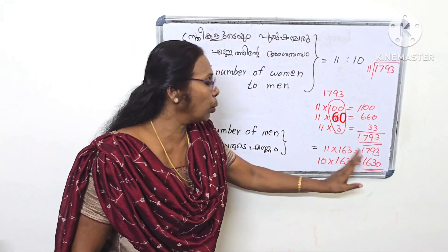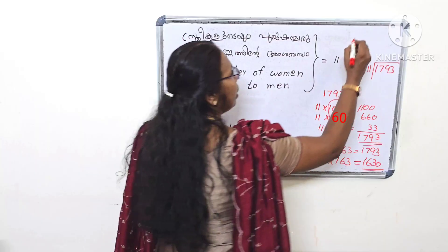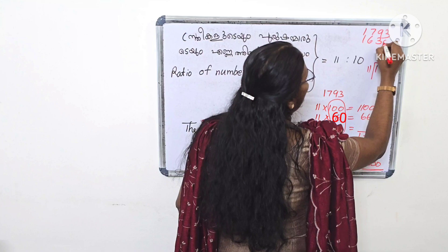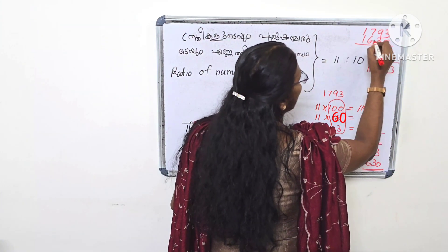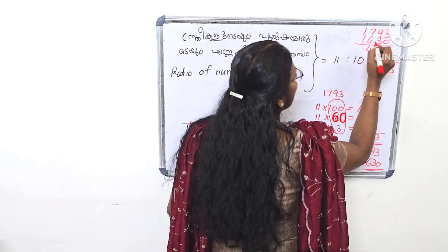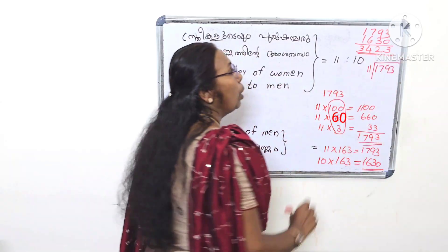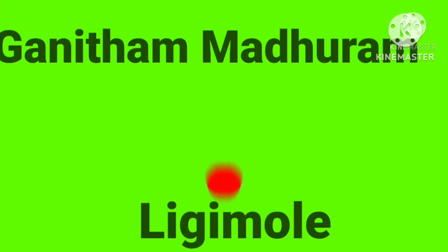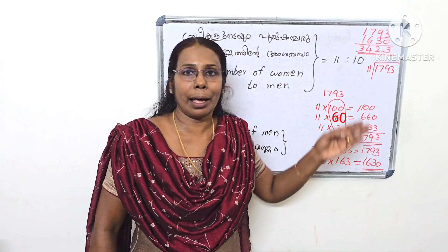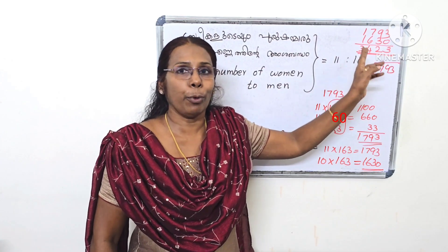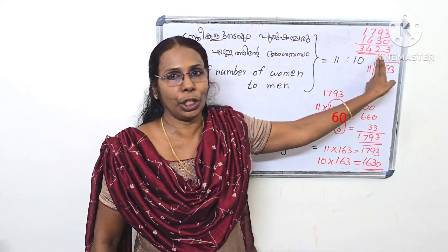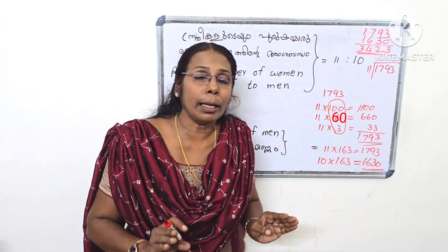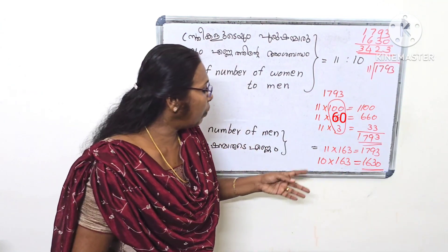Do you want to add these two? 1733 and 1633. That's how we get the total. Now it's scientific.